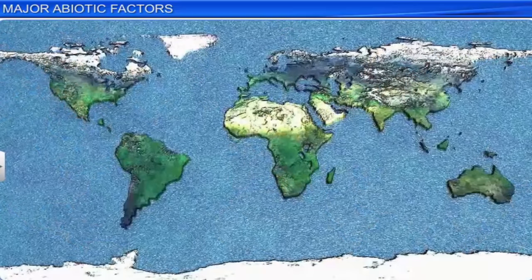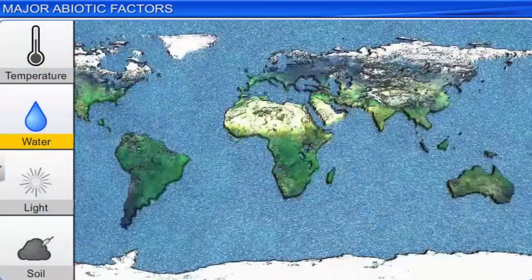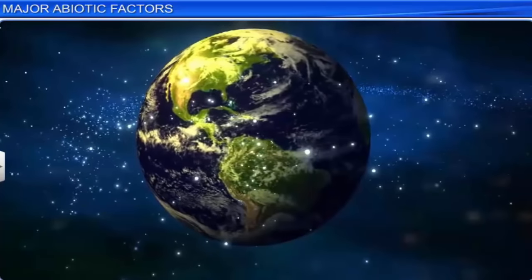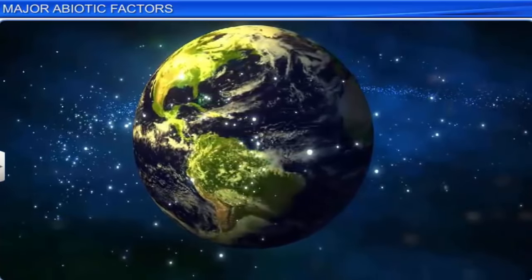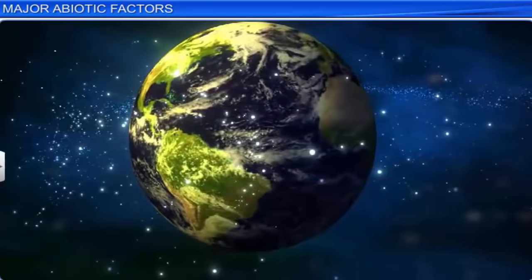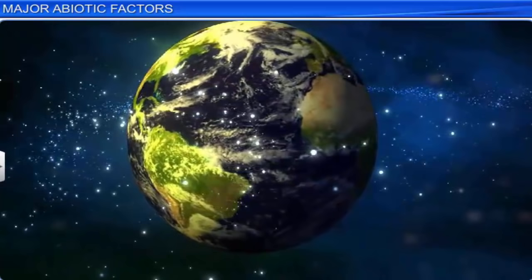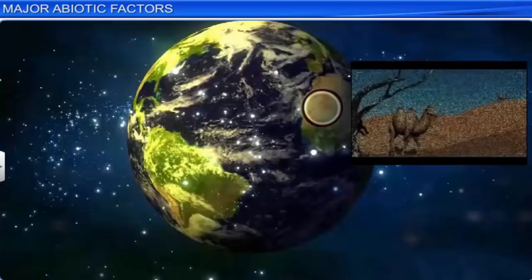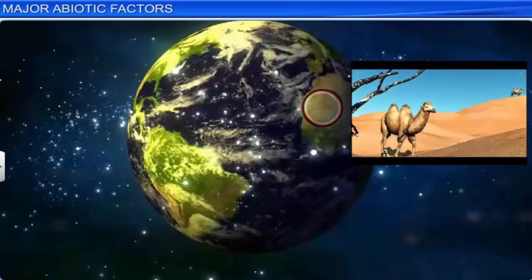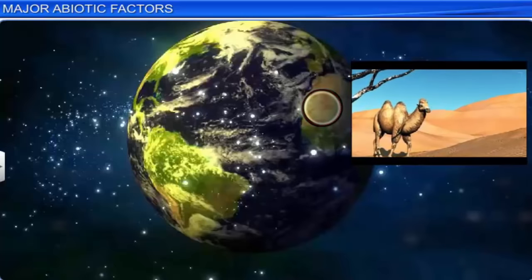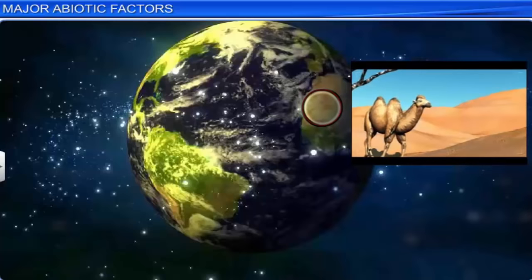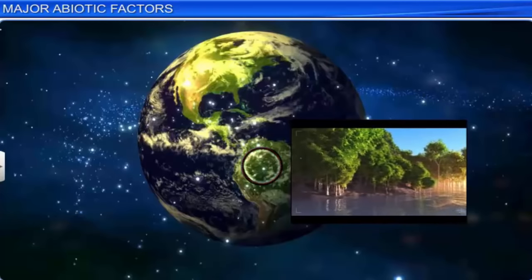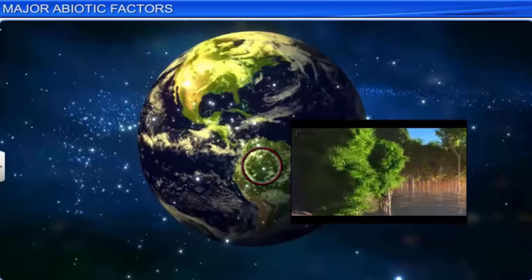Like temperature, water is another important abiotic factor that influences the life of organisms. In fact, life on earth originated in water and is unable to sustain without it. However, water is not uniformly distributed across the planet. Dry places such as deserts have very little water reserves. Naturally, plants and animals have adapted themselves to optimally utilize water. By and large, water greatly influences the distribution of plants and their productivity on our planet.